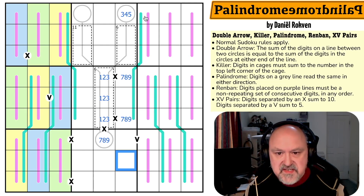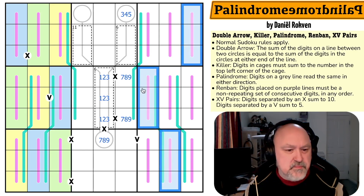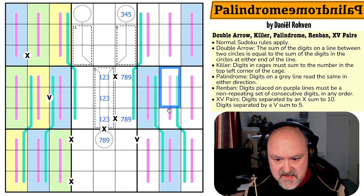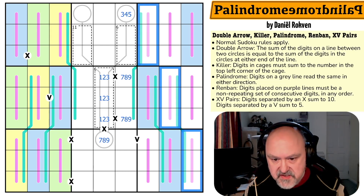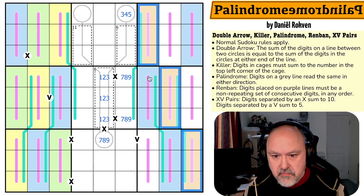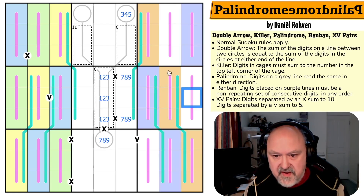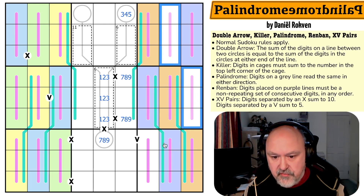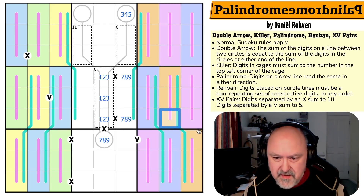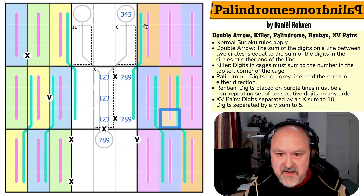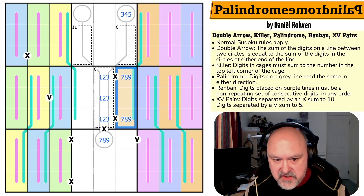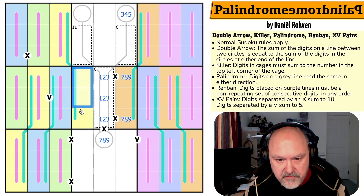I can do the same on the other side. These digits are the same as those digits, and therefore those digits follow. I'm using blue, yellow, and green for one set, and different shades — darker blue and purple — for the other set, because on this side these are orange and these are yellow by palindrome.